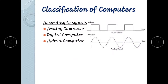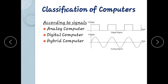The next classification of computers is according to signal type: analog computer, digital computer, and hybrid computer. An analog computer uses an analog signal, which is in the form of a wave.